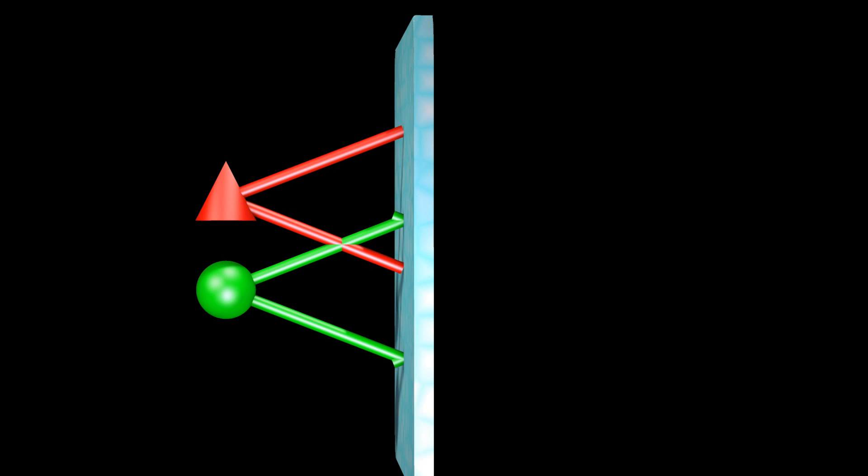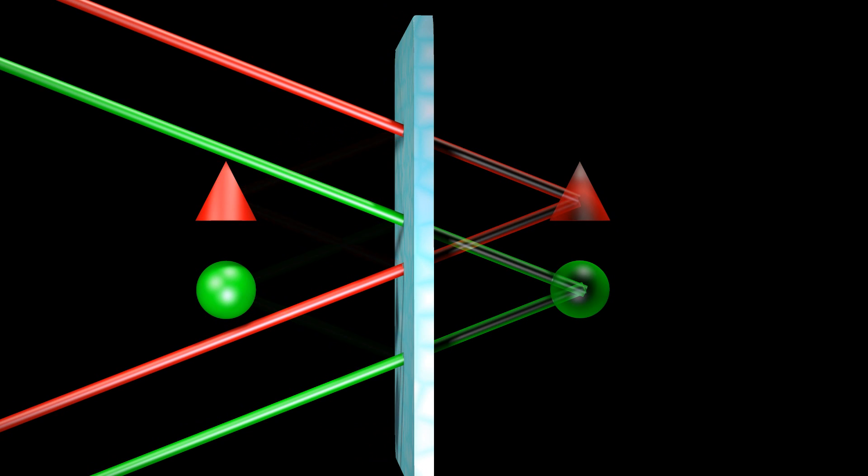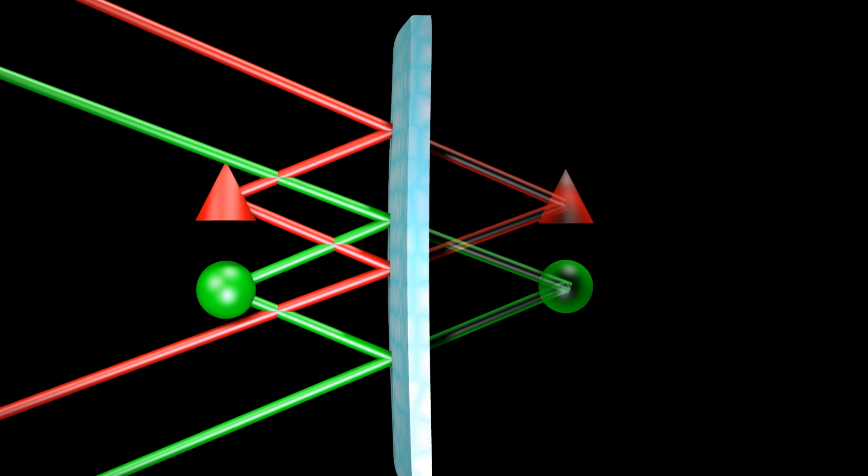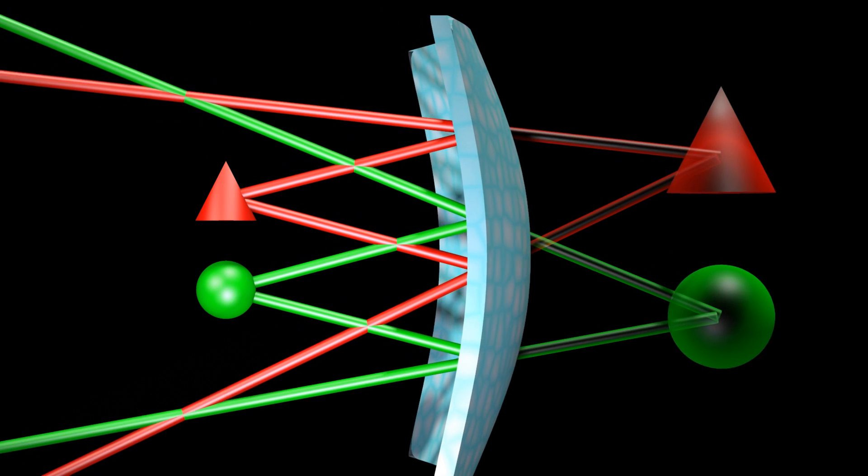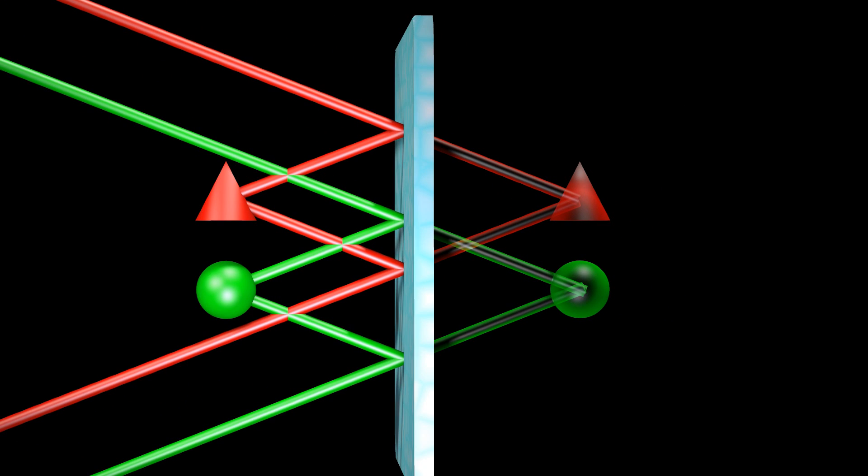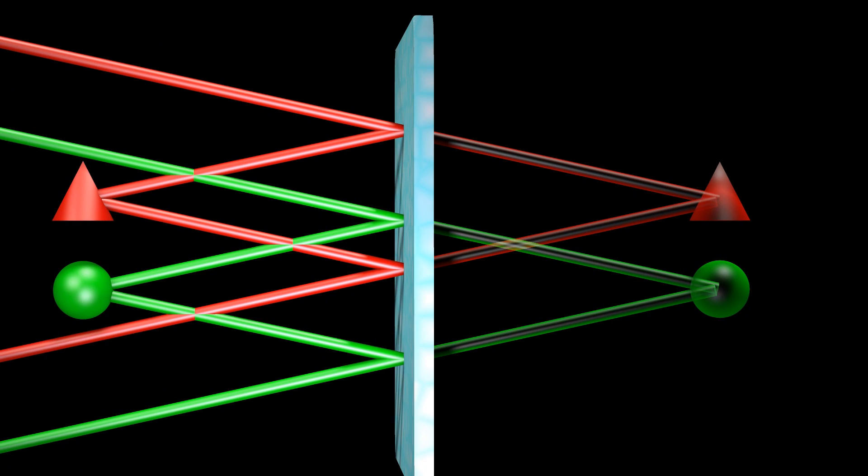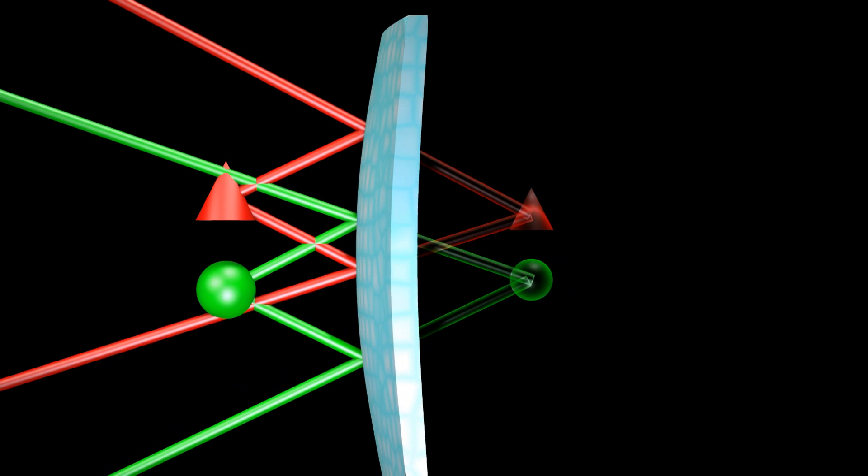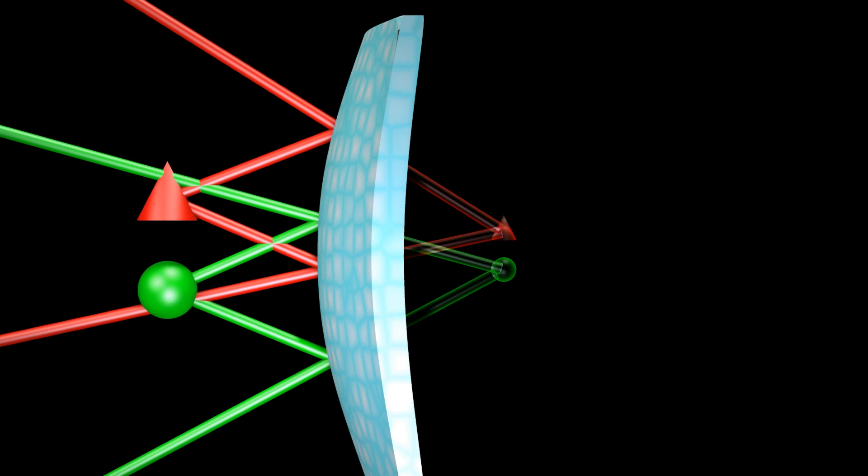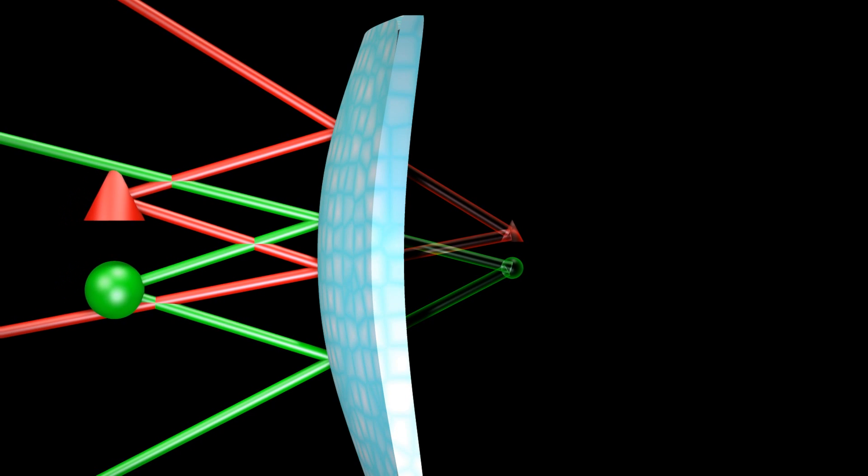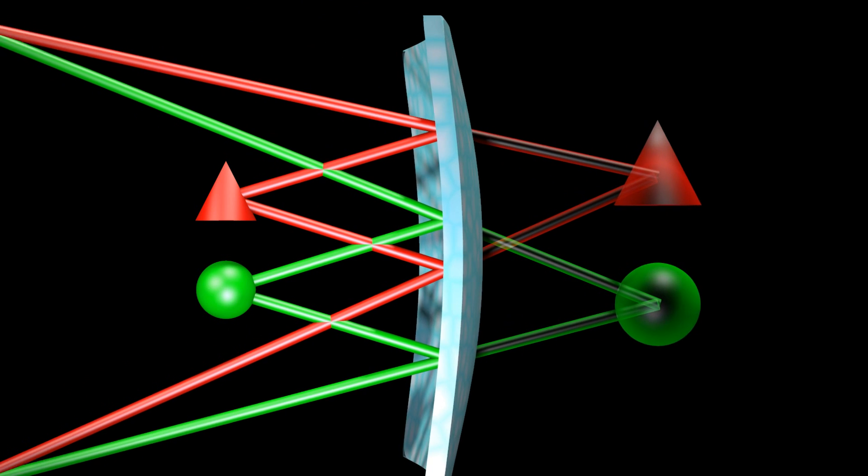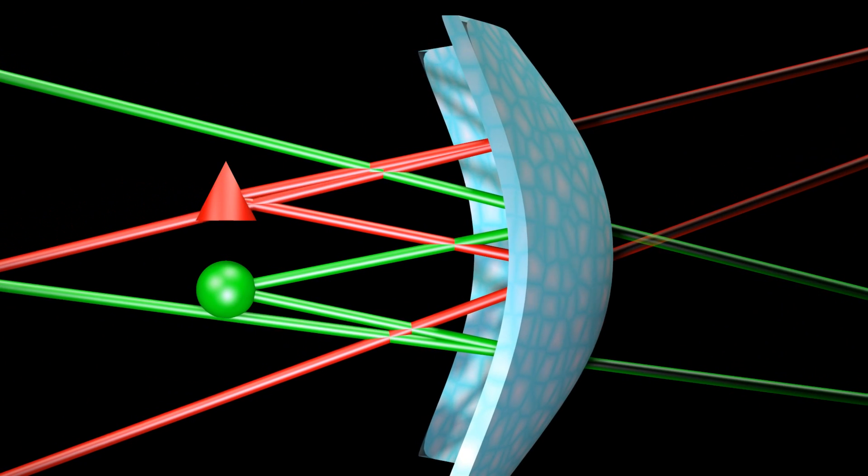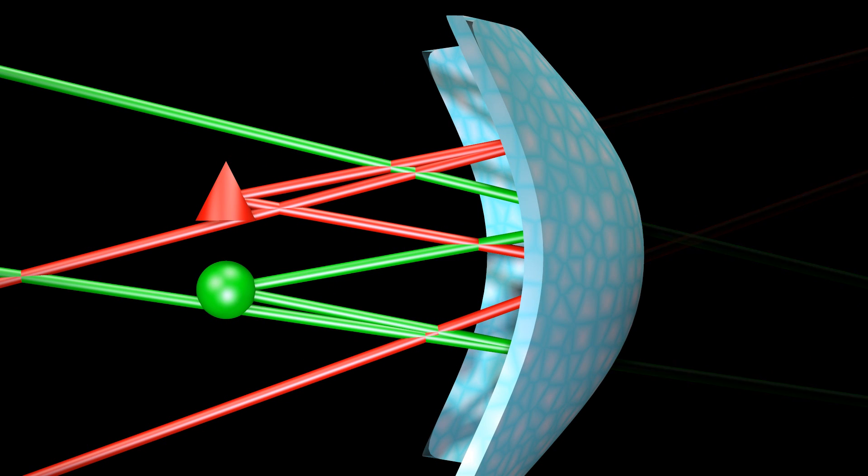For flat mirrors, the reflections appear to be the same size and the same distance from the mirror as the original objects. For curved mirrors, this is no longer true. Mirrors can produce many optical illusions. For a curved mirror like this one, the images can be made to appear in front of the mirror and inverted upside down.